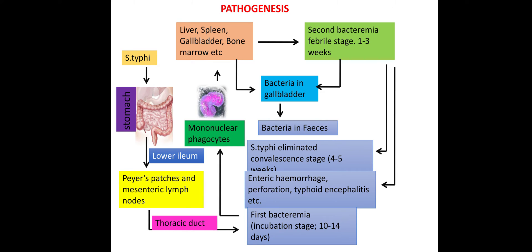In the pathogenesis stages: first, Peyer's patches are involved, spreading to the thoracic ducts. That is the first incubation stage of 10 to 14 days, involving mononuclear phagocytes in the liver, gallbladder, spleen, and macrophages. The second bacteremic stage is from 1 to 3 weeks. In this stage, bacteria from the gallbladder are released as fecal matter. In the fourth to fifth week, typhus is eliminated. Complications at this stage include enteric hemorrhage, internal bleeding, and typhoid encephalitis.